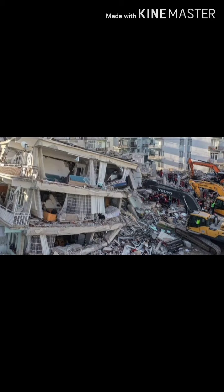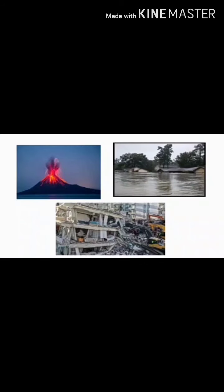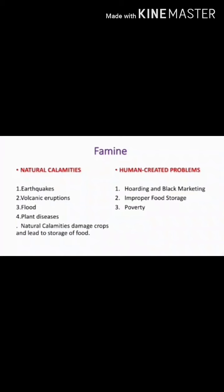Other natural calamities like earthquakes, plant diseases, and volcanic eruptions are also damaging crops and leading to shortage of food. So, earthquake, flood, drought, plant diseases, and volcanic eruptions — these are all the natural calamities which are responsible for famine.